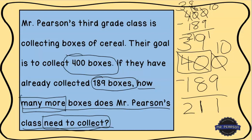My scratch area is a little convoluted, but the last thing we want to do is label our answer. The difference we found was 211, and we're going to write 211 boxes — we could write 'boxes of cereal' because that's what they were collecting. All right, there you go — that's another story problem. I hope you were able to solve it and came up with the same answer. I look forward to working through another problem with you next time.